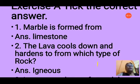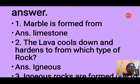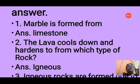Question 1: Marble is formed from which material? Options are: A. sandstone, B. shell, C. granite, D. limestone. The answer is limestone, because after metamorphosis limestone changes into marble.